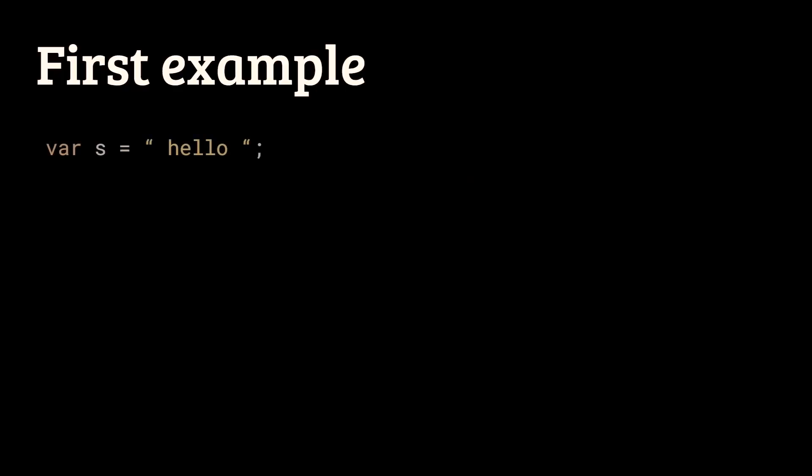Let's say that we want to apply the trim operation to the string, or strip in Python, to obtain its content, but without the surrounding spaces. We could do t equal to s dot trim.